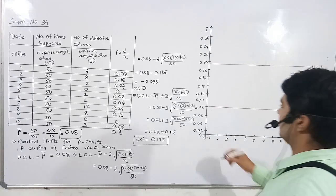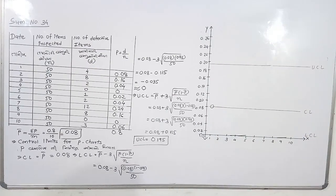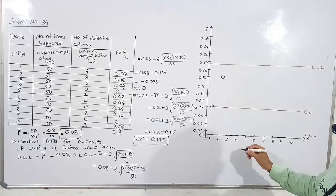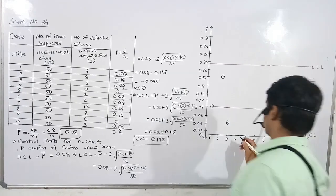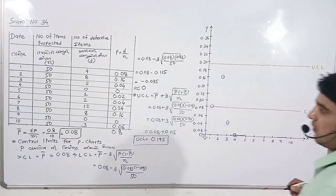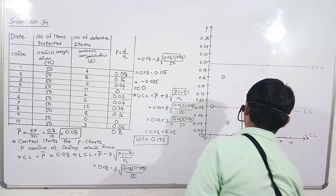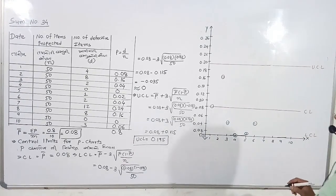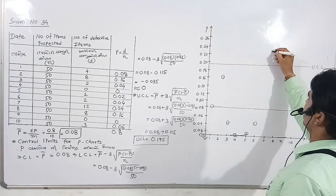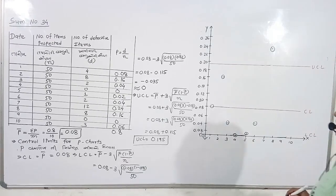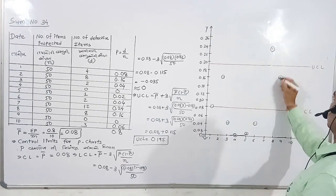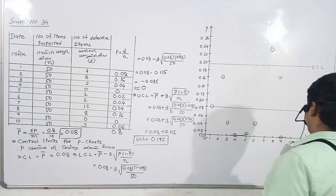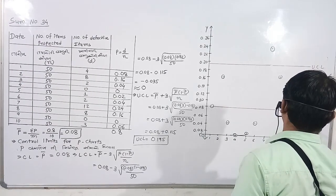Now plot the data points: sample 1 at 0.08, sample 2 at 0.16, sample 3 at 0.04, sample 4 at 0, sample 5 at 0.02, sample 6 at 0.04, sample 7 at 0.24, sample 8 at 0.16, sample 9 at 0, sample 10 at 0.06.